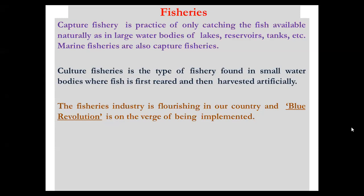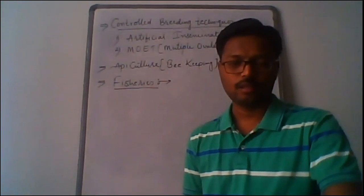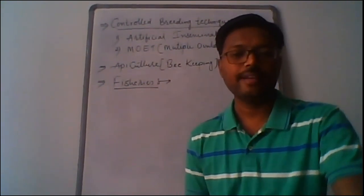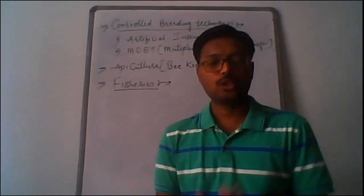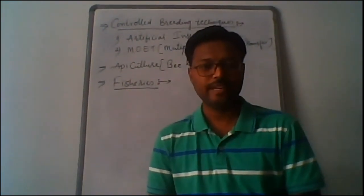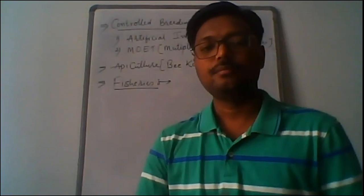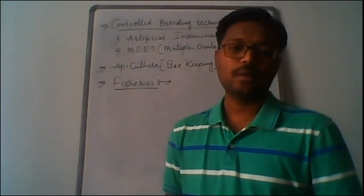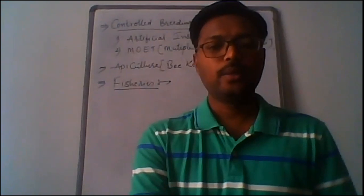The fishery industry is flourishing in India and produces a large number of aquatic animals — this is called the blue revolution. There are two important revolutions: one is milk production, called the white revolution, whose father is Verghese Kurien, with its main hub being Anand in Gujarat — home of the Amul factory. The other is the blue revolution — the industrial production of aquatic animals to fulfill food requirements. This concludes today's lecture.